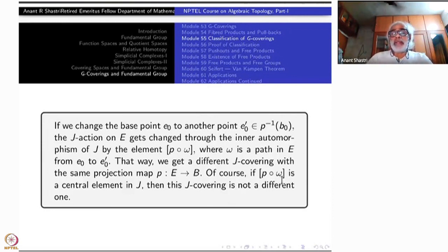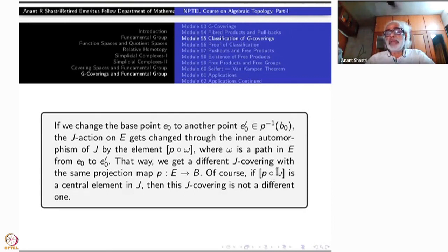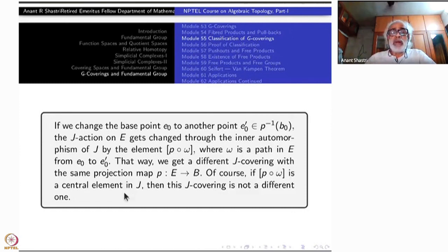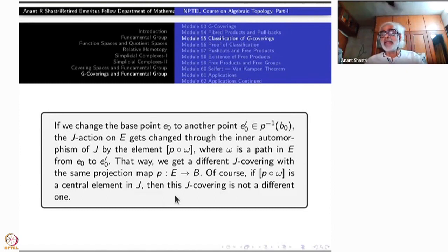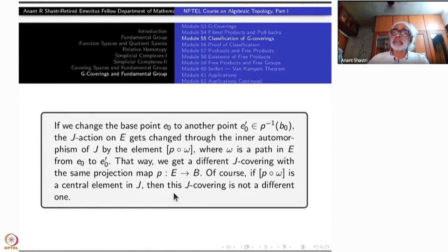On the other hand, if P(ω) represents a central element — here ω is a path inside E and P(ω) is a loop in π₁ inside B at B0 — if this is a central element in J (central meaning it commutes), then the conjugation is trivial. In that case, the G-covering structure does not change. Otherwise, the G-covering structure will change.